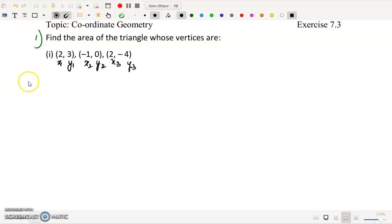So friends, this is our area of triangle formula. It will be half into x1 times (y2 minus y3), plus x2 times (y3 minus y1), plus x3 times (y1 minus y2). Okay.